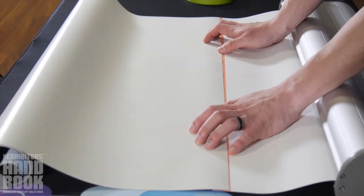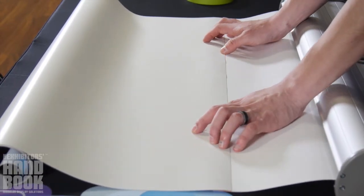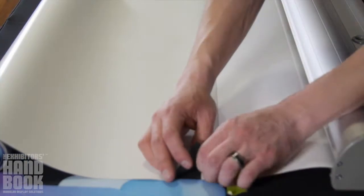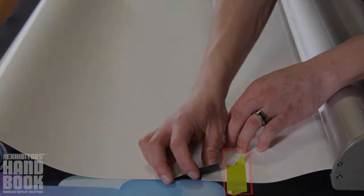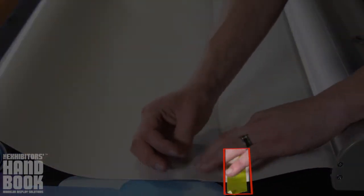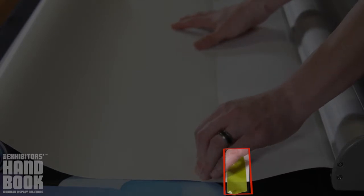Line the bottom of the graphic up with the top of your white leader strip, which is attached to the base. Apply masking tape to either side of the leader strip to prevent it from moving in the process.